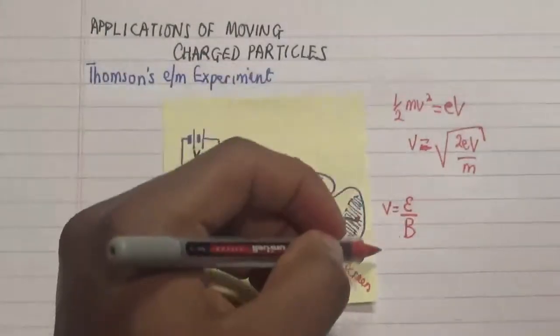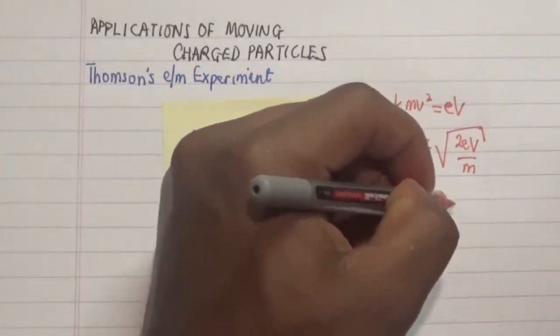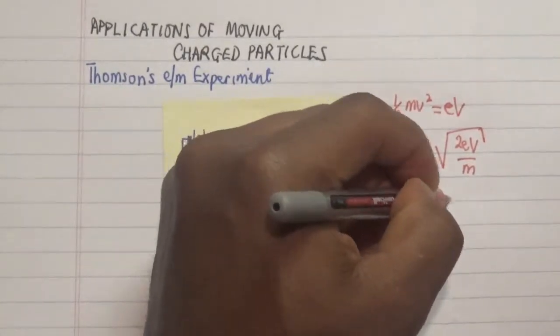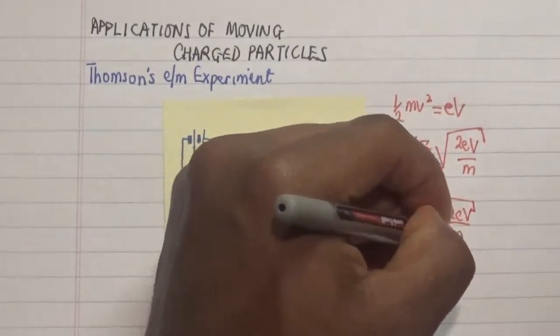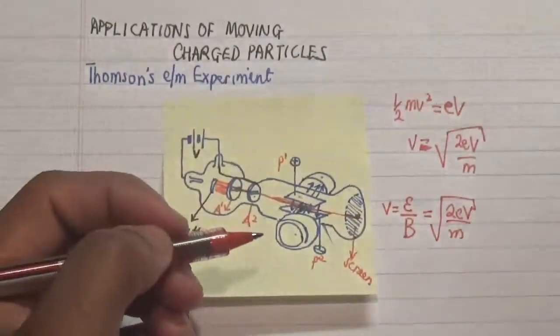Now what happens next is that take note also that this is equal to square root of 2eV over m, which is gotten from my original equation which we have over here.